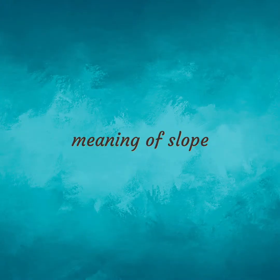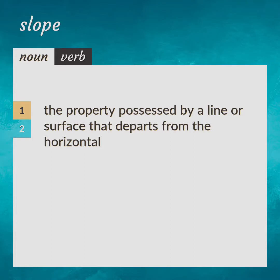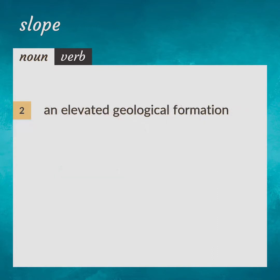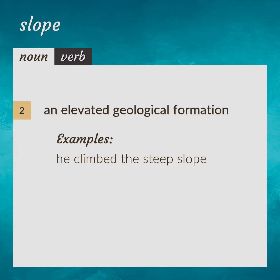Meaning of slope. The property possessed by a line or surface that departs from the horizontal. Gradient. An elevated geological formation. He climbed the steep slope. Incline, side.